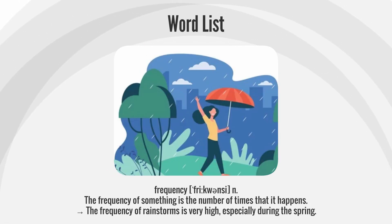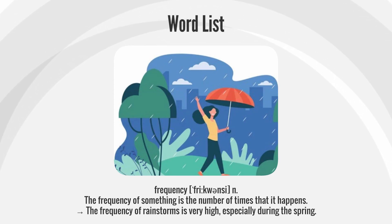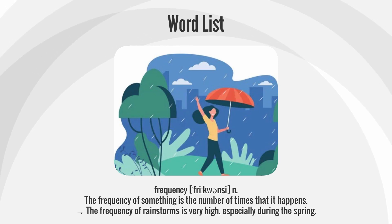Frequency. The frequency of something is the number of times that it happens. The frequency of rainstorms is very high, especially during the spring.